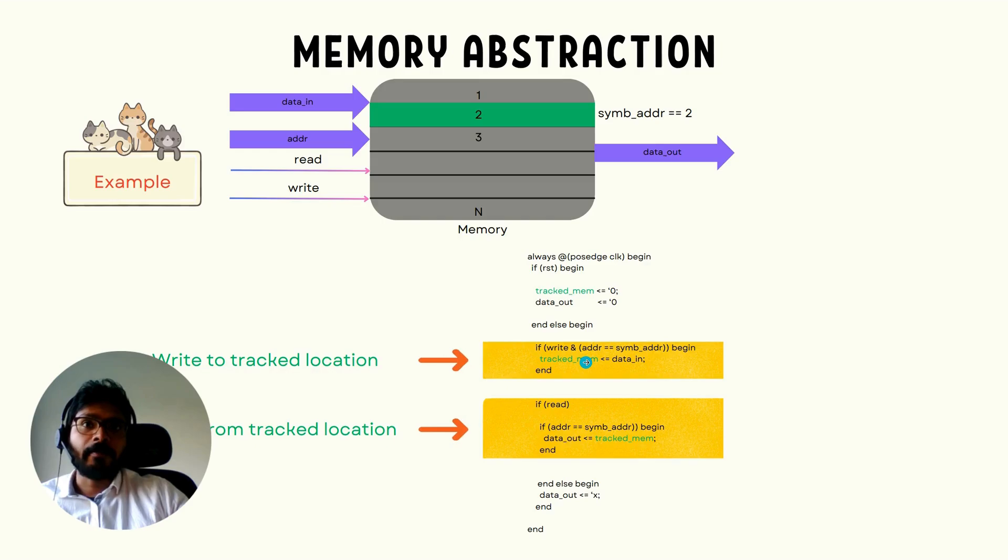The first red arrow right here shows how the data is stored. The data data_in is stored in the track_mem when the address is equal to symbolic address for a write.